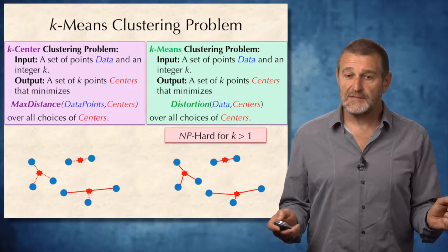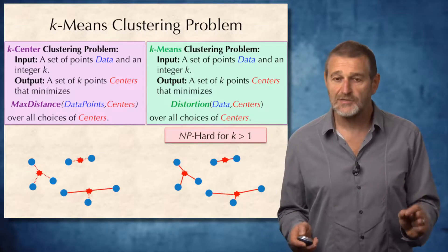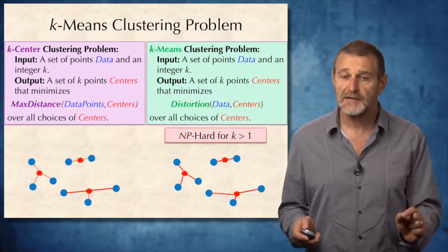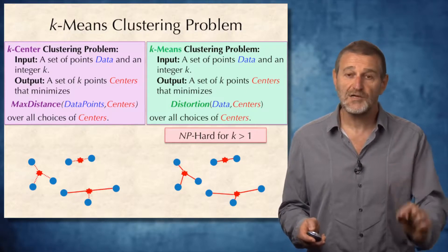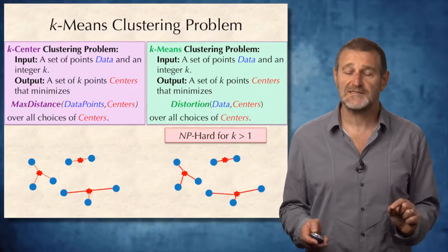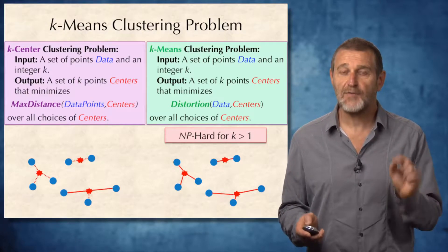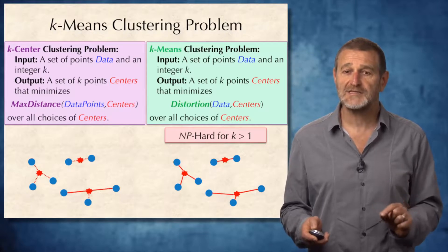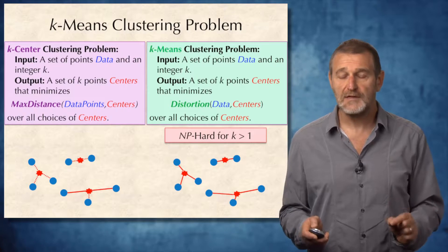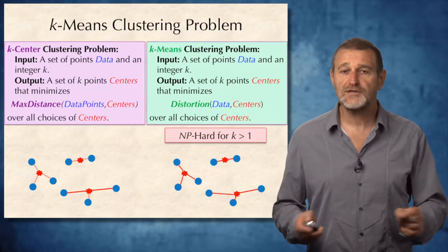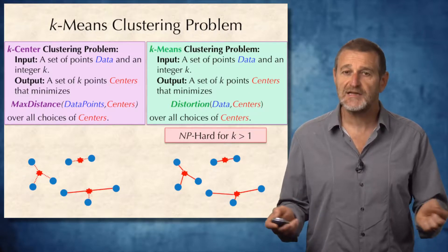It may appear that the k-means clustering problem is simple, but it turns out to be NP-hard even for partitioning a set of data points into just two clusters. The only case with a polynomial algorithm for k-means is when k equals 1. You may think there is no point in clustering a dataset into one cluster, since that clustering is trivially given.